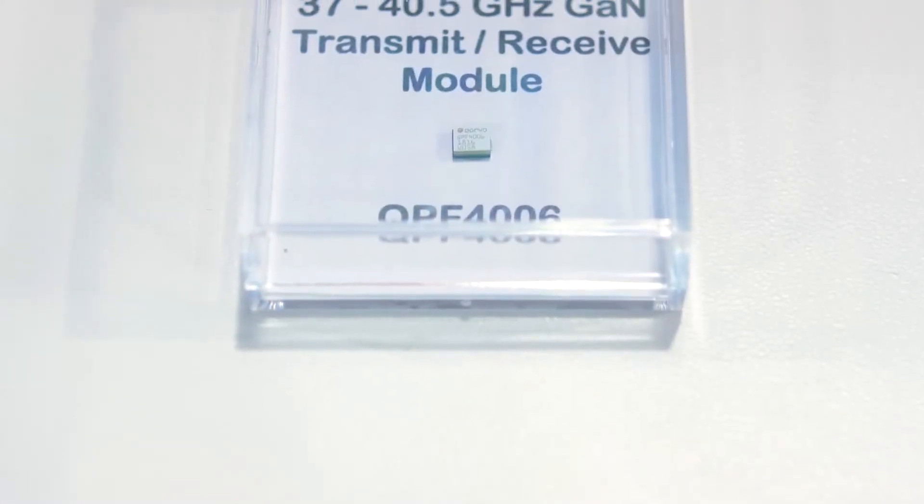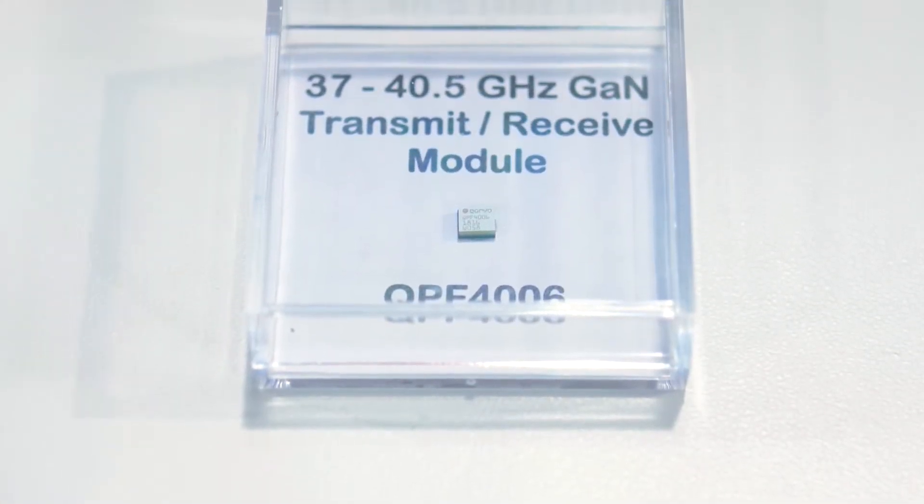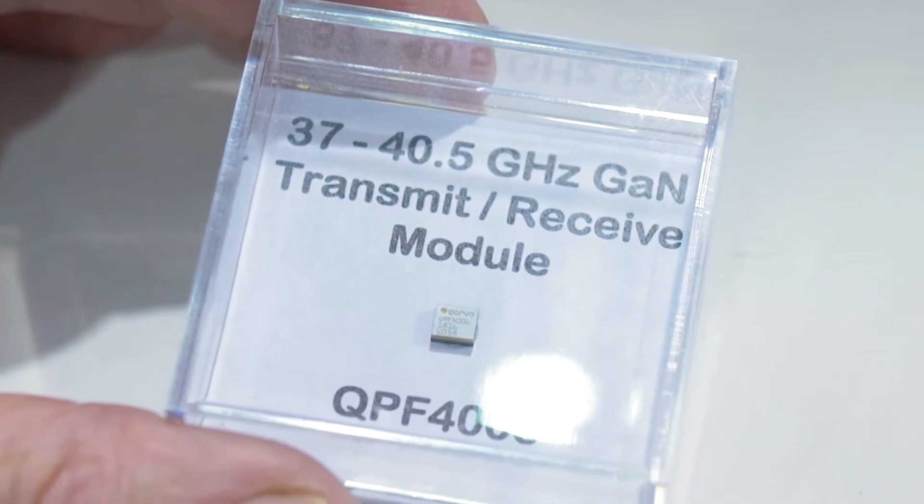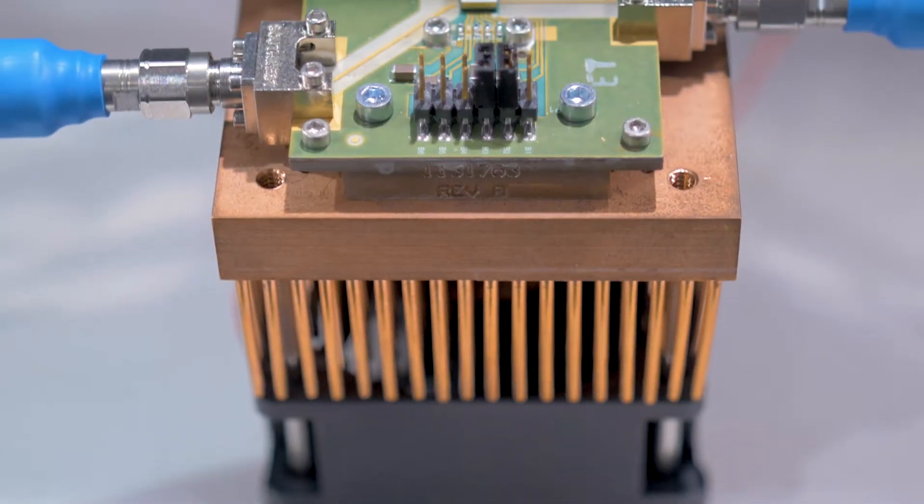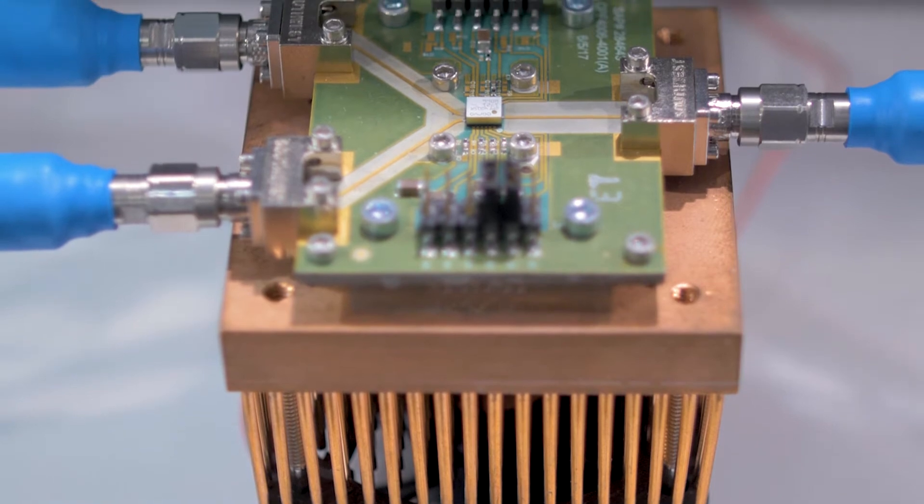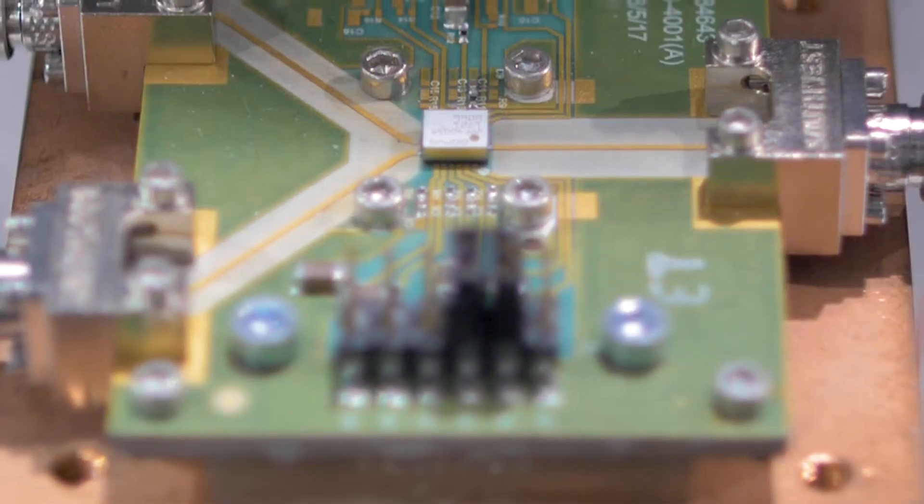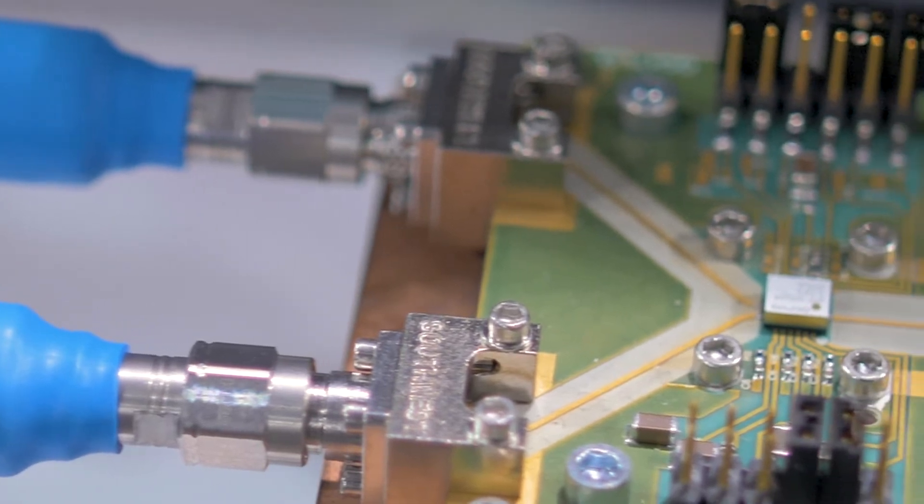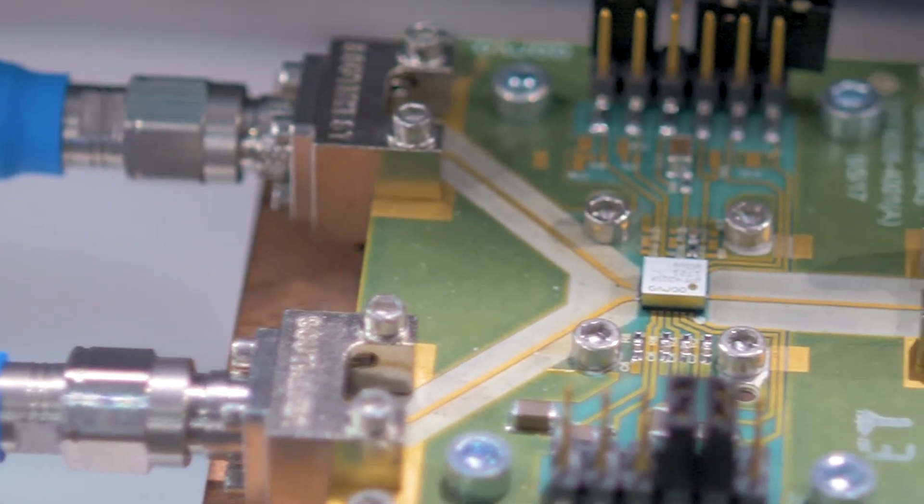That's right. This is actually the world's first 39 gigahertz front-end module that integrates a PA, LNA, and switch all into a very small package. It's a gallium nitride technology, which means we can make very high power. This is a 2-watt saturated PA and very low noise figure, less than 4.2 dB in this tiny package that allows folks to integrate it into a phased array technology needed for 5G millimeter wave.